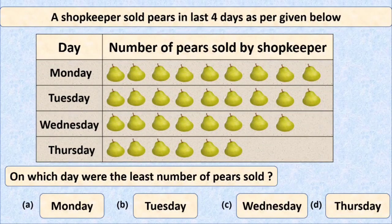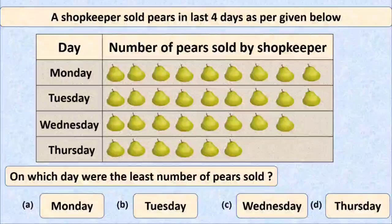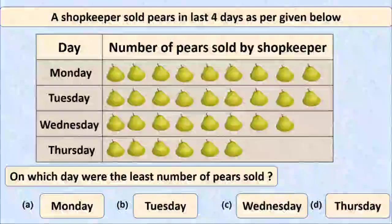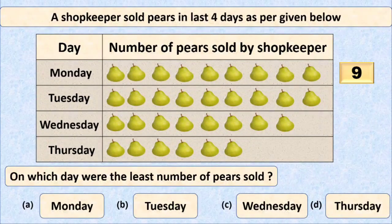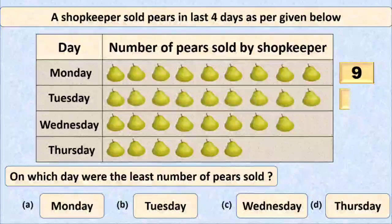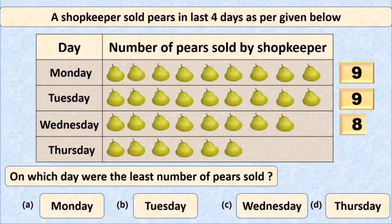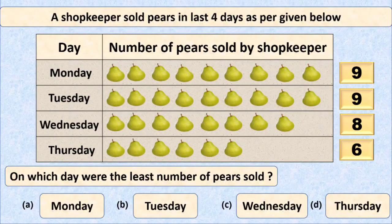Now let's solve this problem. We will find the number of pears sold on each day. On Monday, nine pears were sold. On Tuesday, he sold nine pears. On Wednesday, he sold eight pears. And on Thursday, he sold six pears.